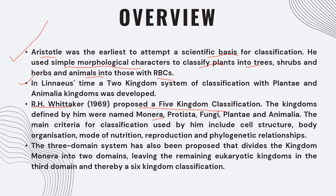R.H. Whittaker proposed a five-kingdom classification: Monera, Protista, Fungi, Plantae, and Animalia. The criteria used for classification included cell structure, body organization, mode of nutrition, reproduction, and phylogenetic relationship.